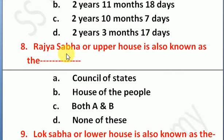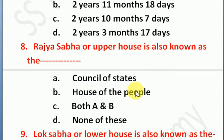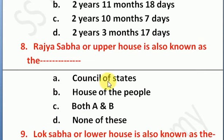Question number 8: Rajya Sabha or Upper House is also known as — Option A: Council of States, Option B: House of the People, Option C: both A and B, Option D: none of these. The right answer is Option A — Council of States is also known as Rajya Sabha or Upper House.